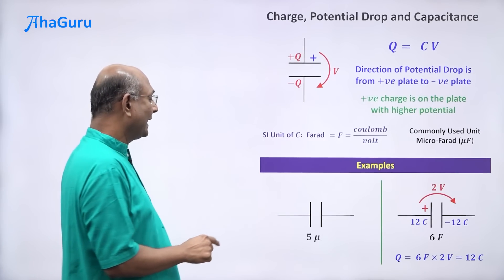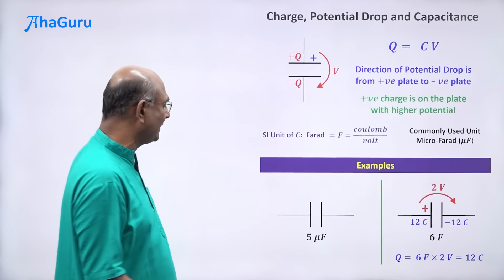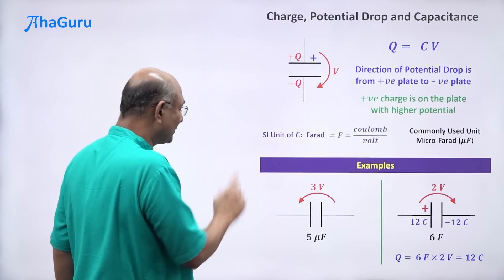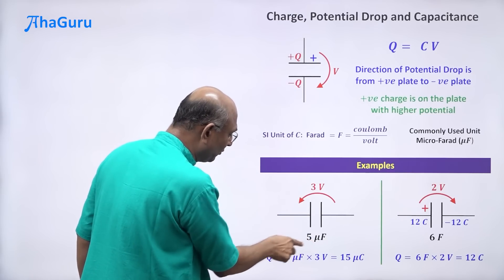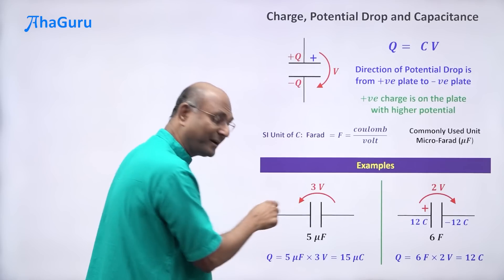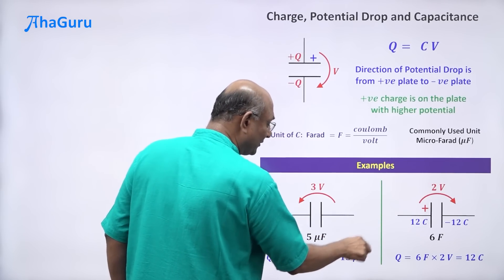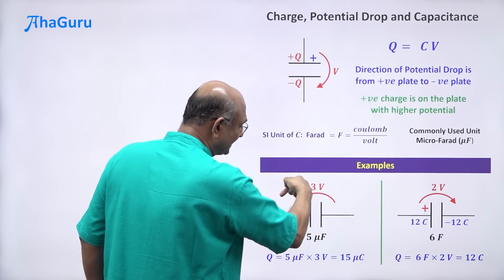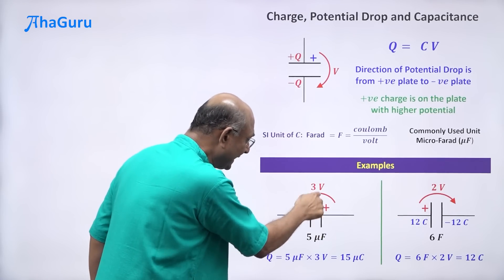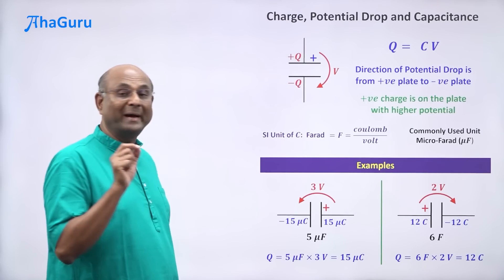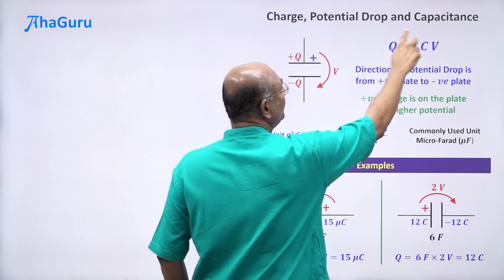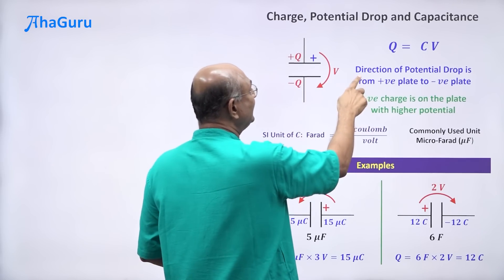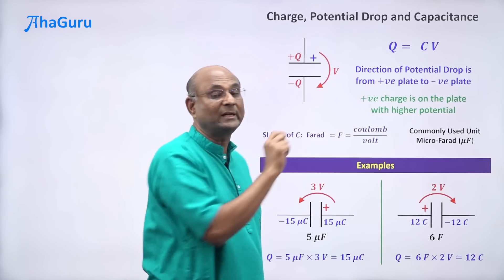Another example: a 5 microfarad capacitor with a 3 volt potential drop. Q equals CV equals 5 microfarads times 3 volts equals 15 microcoulombs — don't forget the micro. To find which plate is positive, look at the direction of the potential drop from positive to negative plate. So the plate on the high-potential side has plus 15 microcoulombs, and the other plate has minus 15 microcoulombs. Use Q equals CV for magnitude, then use the direction of the potential drop to determine which plate is positive.